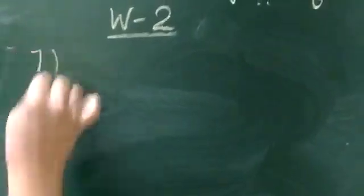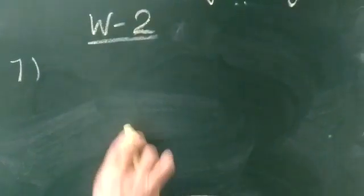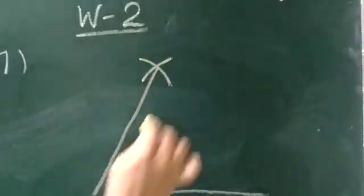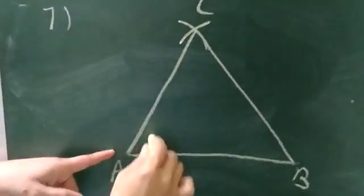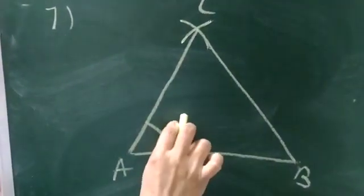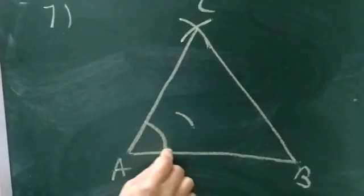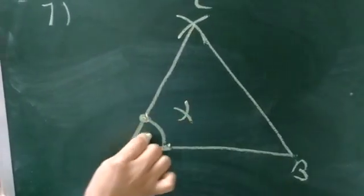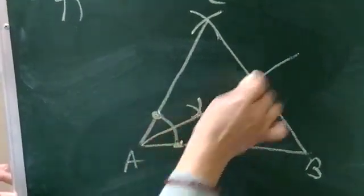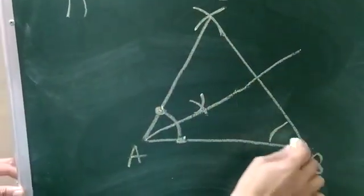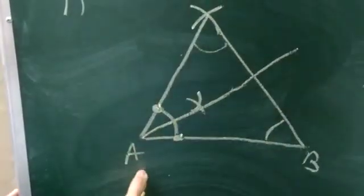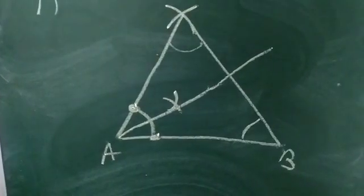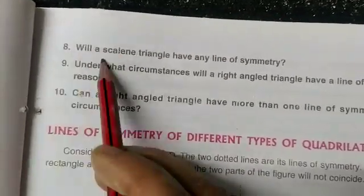Let me explain question 7 one more time. Draw a line, place the compass at the first point to make an arc, then at the second point to make an arc, and join them. Do this from points A, B, and C, opening the compass to draw arcs each time. Each joined dotted line is a line of symmetry.